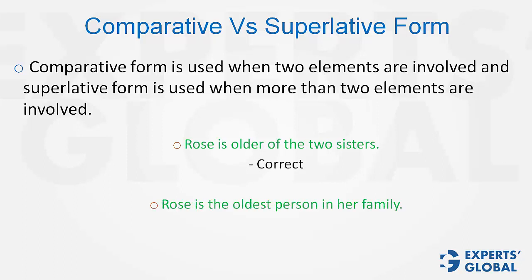'Rose is the oldest person in her family.' The family may have many people and, therefore, superlative form — 'oldest' — is the correct usage.